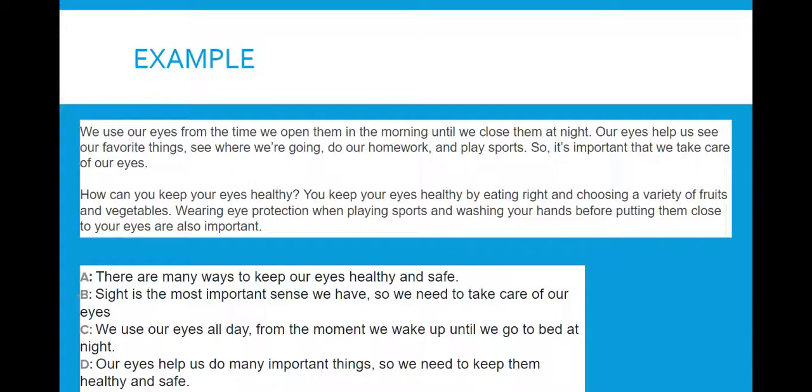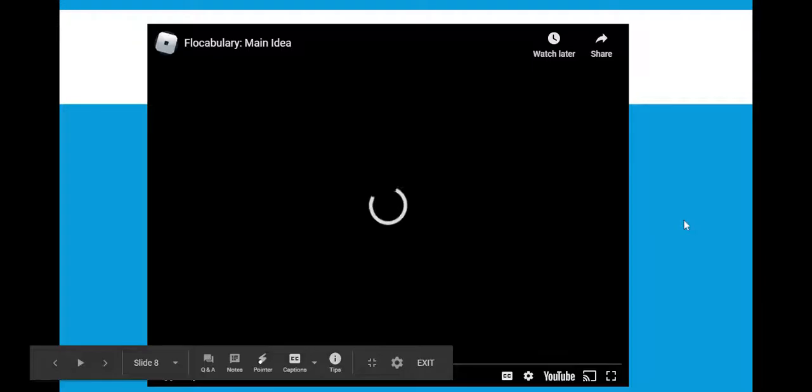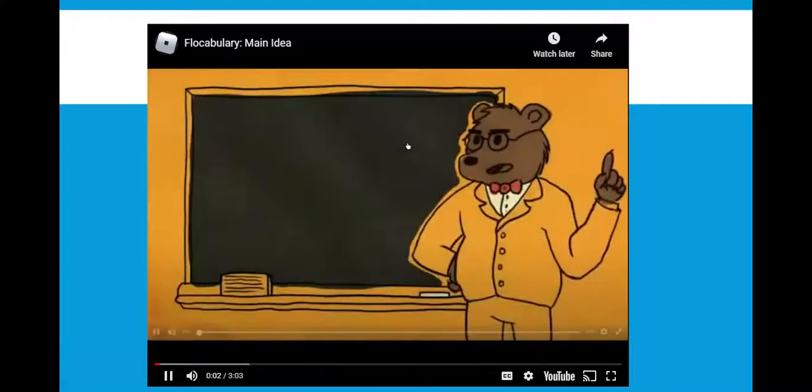So if we look at A for example, there are many ways to keep our eyes healthy and safe. That is true, there are, but they only talk about that in paragraph two. They don't mention it in paragraph one. So that cannot be our correct answer. So I'll give you a second to think. Again, if you need to pause this to think longer, you can. Our main idea is D, our eyes help us do many important things, so we keep them healthy and safe. If you also thought D was the correct answer, give yourself a pat on the back.